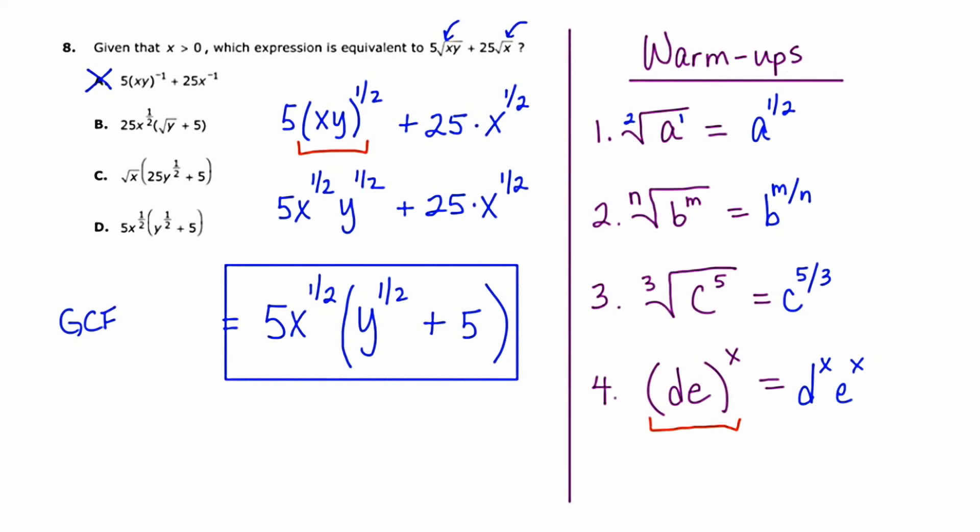Now, if that transition from the second to the third step was a little bit fuzzy for you, just to buy into it a little more, you could actually distribute this through. Five x to the one half times y to the one half would be five x to the one half y to the one half. And five x to the one half times five would be 25 x to the one half. So maybe just going through that will help you at least understand why I put the answer that I did.